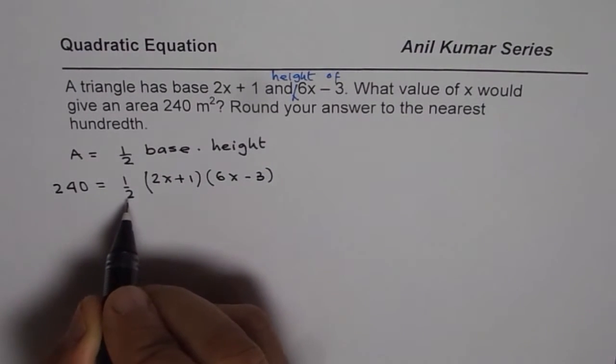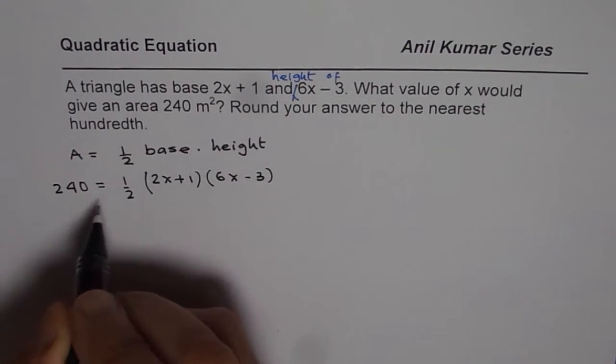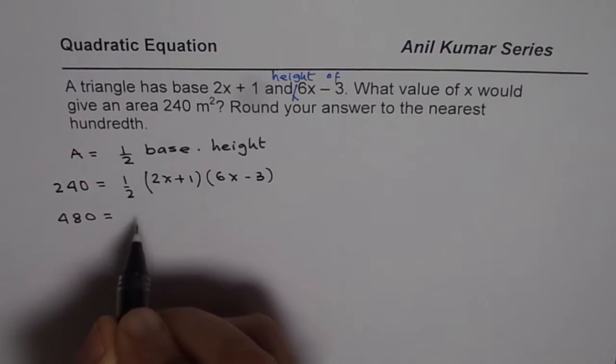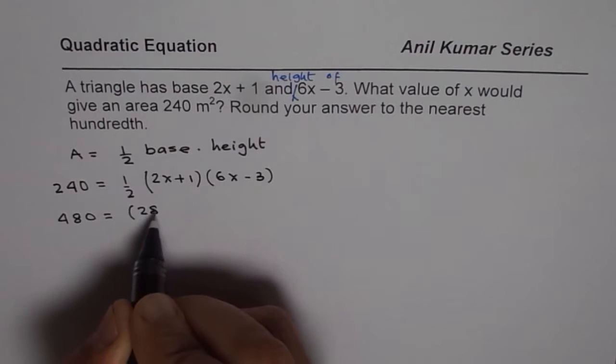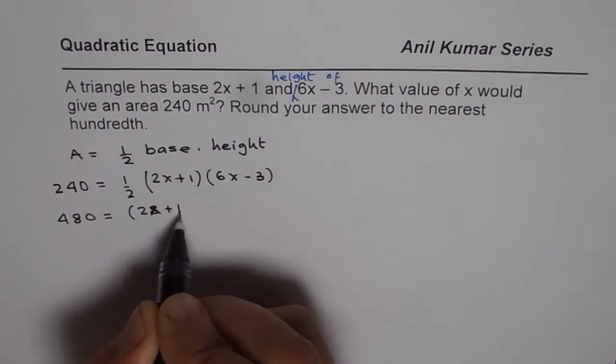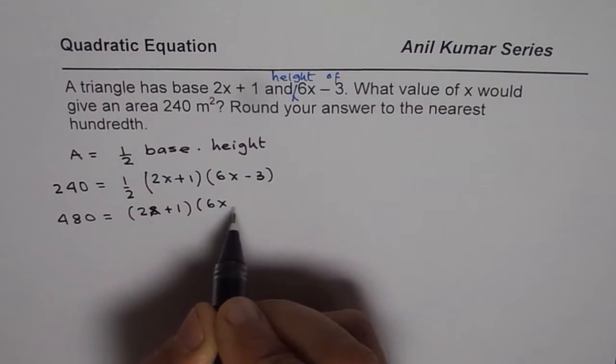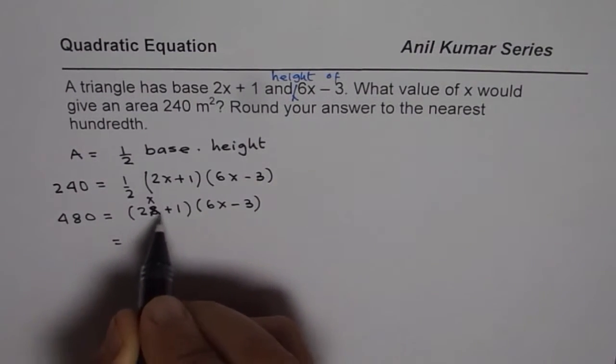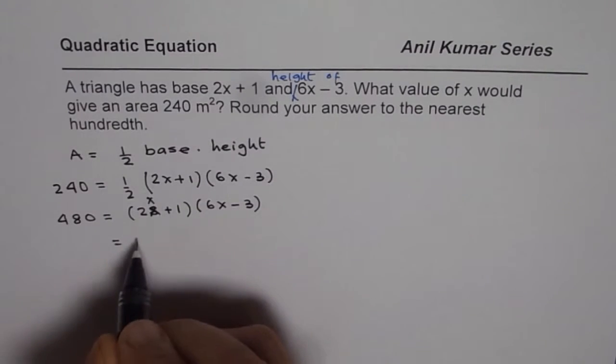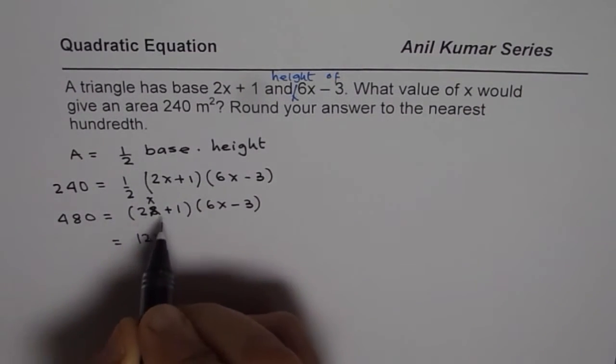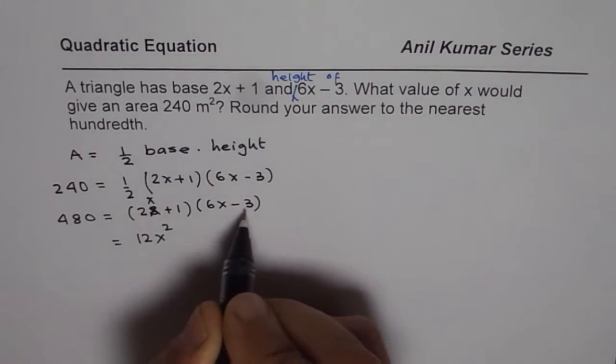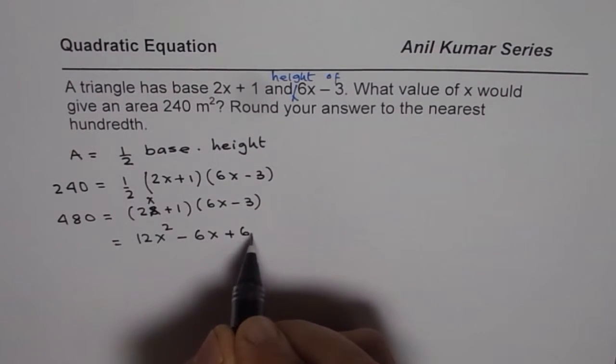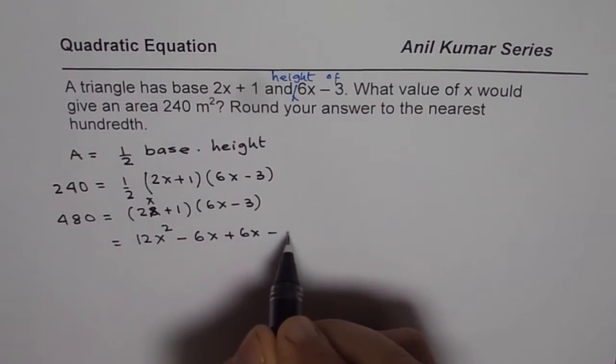We can multiply by 2 on both sides. So we get 480 equals 2x plus 1 times 6x minus 3. Now we can open this bracket on the right side. 2x times 6x is 12x squared and 2x times minus 3 is minus 6x. Multiplying by 1, we get plus 6x minus 3.